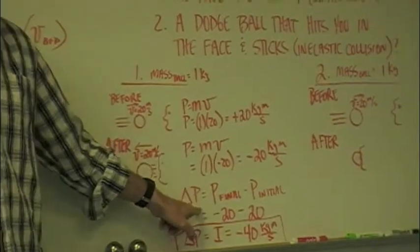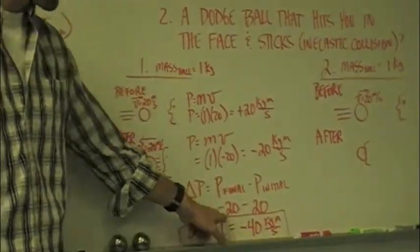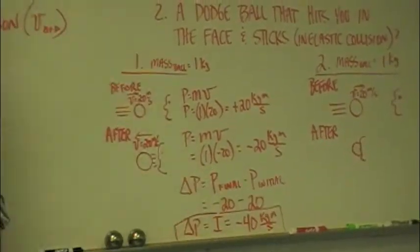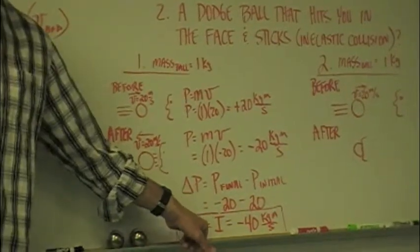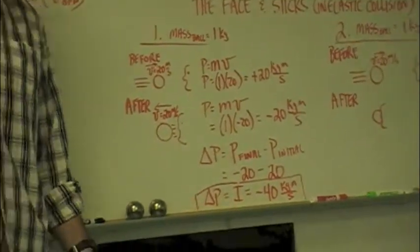So the change in momentum is equal to the final minus the initial. So we get negative 20 minus 20. We actually get a negative 40 kilogram meters per second change in momentum, which is also equal to the impulse. So when the ball hit the face and bounced back,